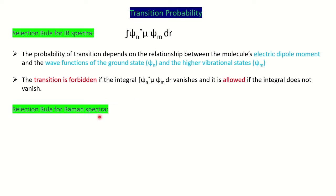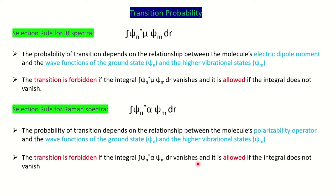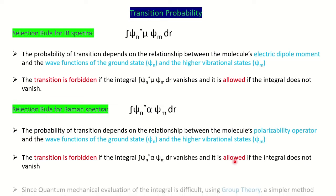Similarly, you have the selection rule for Raman spectra. Since Raman spectra depends on polarizability, the change in polarizability is indicated here with α, and ψ_n and ψ_m are the wave functions for the ground and excited vibrational states. The same rule applies: if the integral vanishes it is forbidden, and if it is non-zero or non-vanishing then it is an allowed transition.